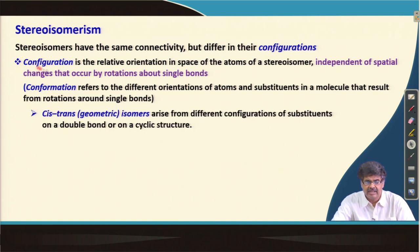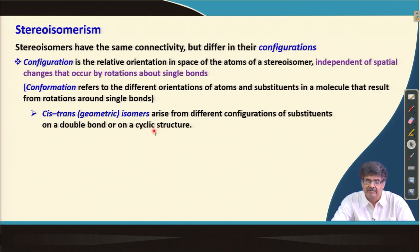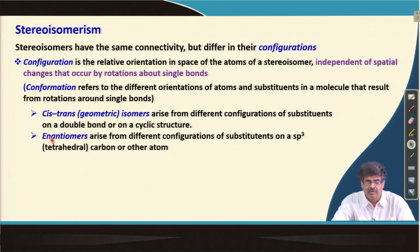Different types of configuration can be possible. For example, cis-trans configuration or geometric isomers, which arise from the different configurations of substituents on an sp3 or tetrahedral carbon atom or other atom. These are examples of stereoisomers because they have different configurations on a tetrahedral carbon atom.